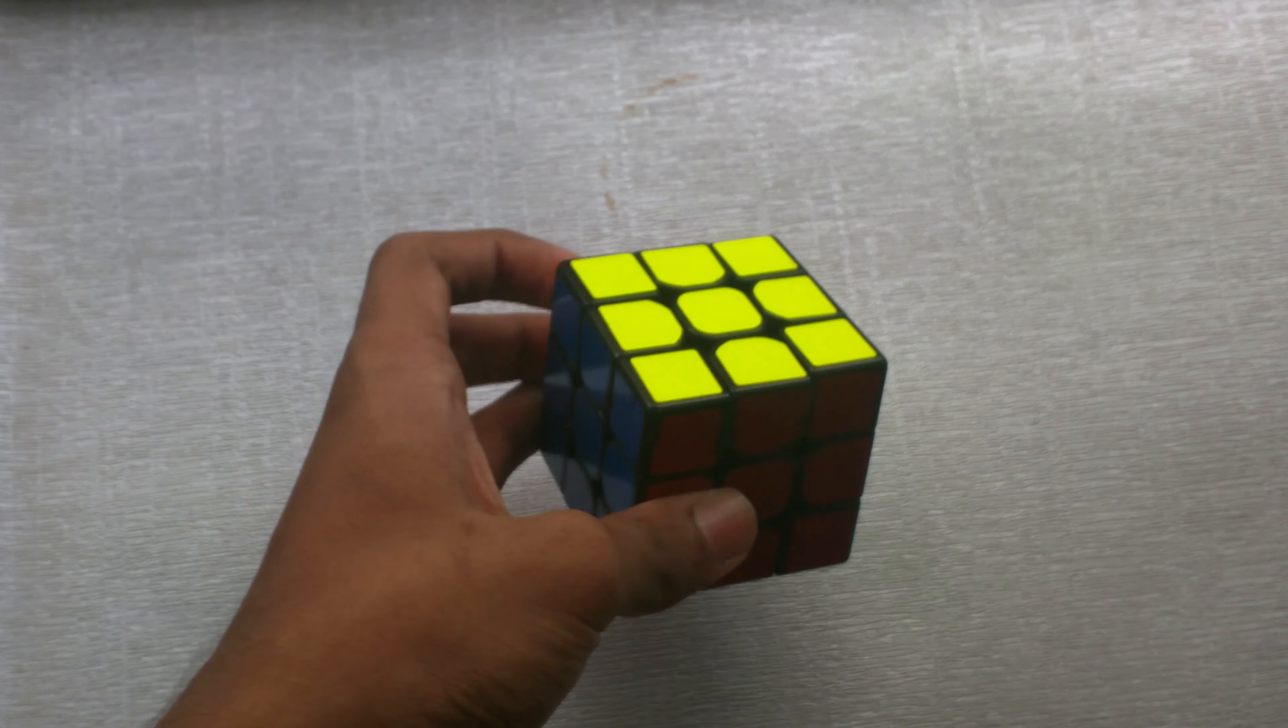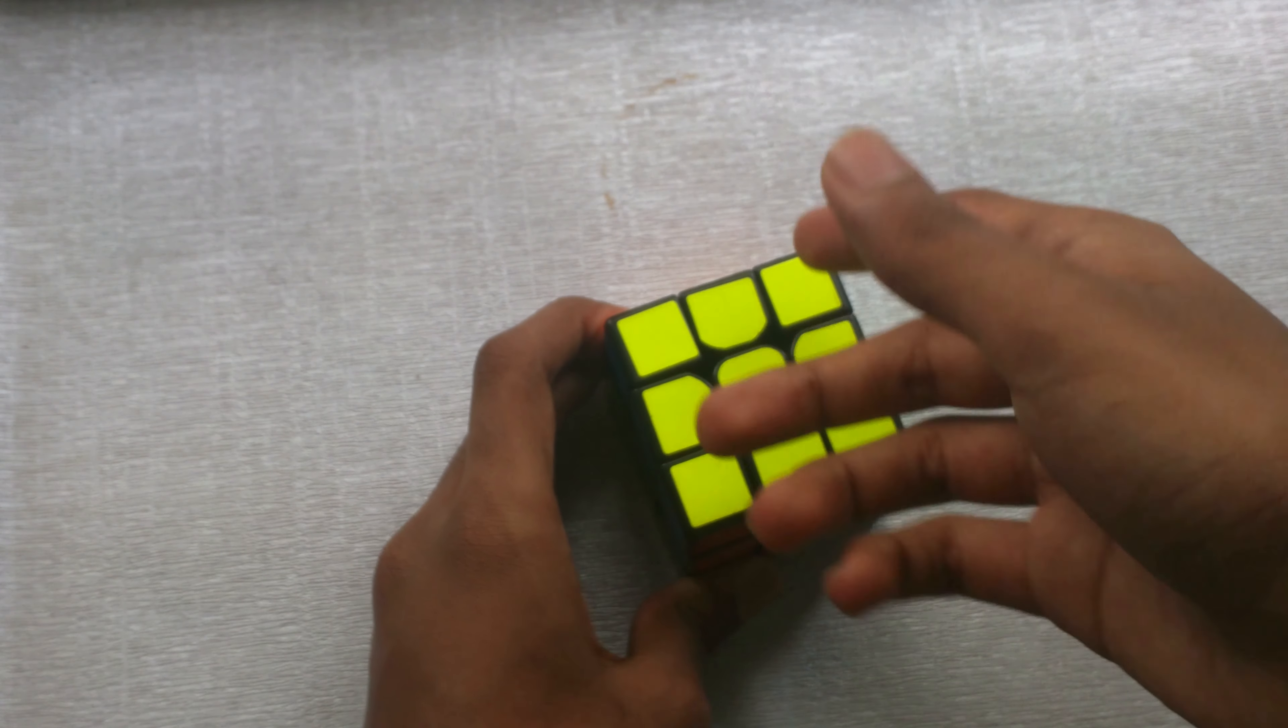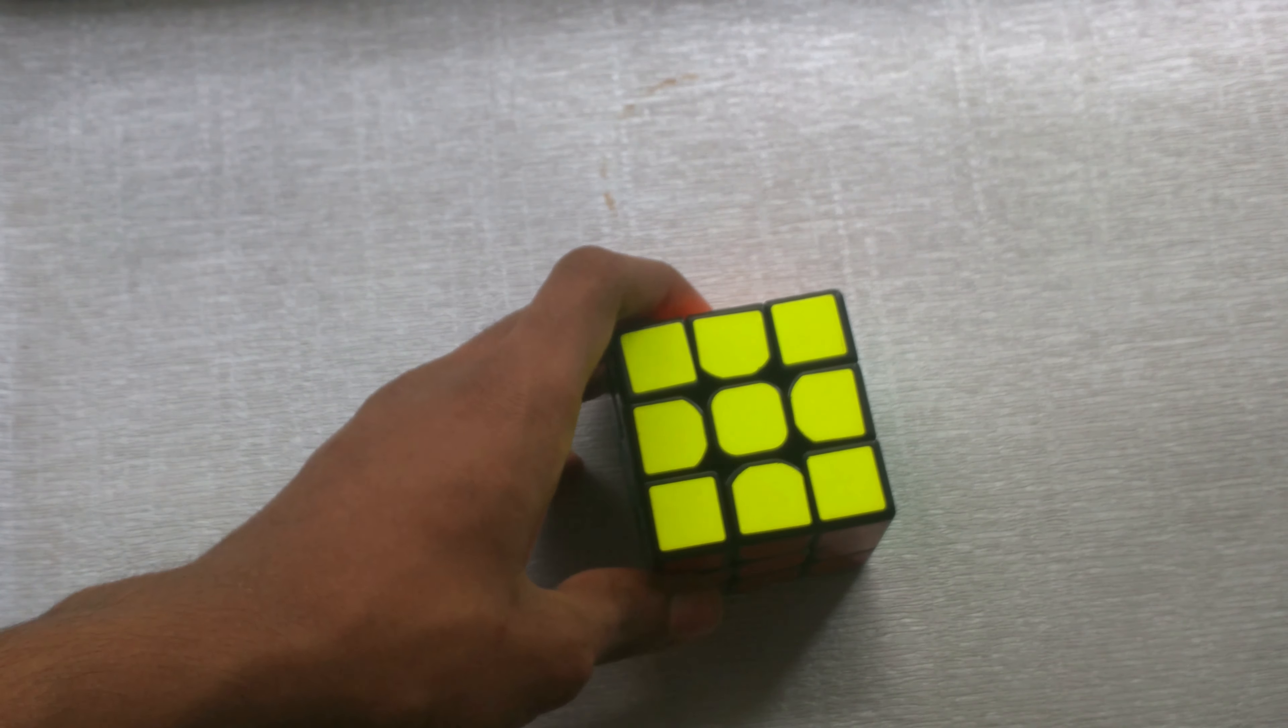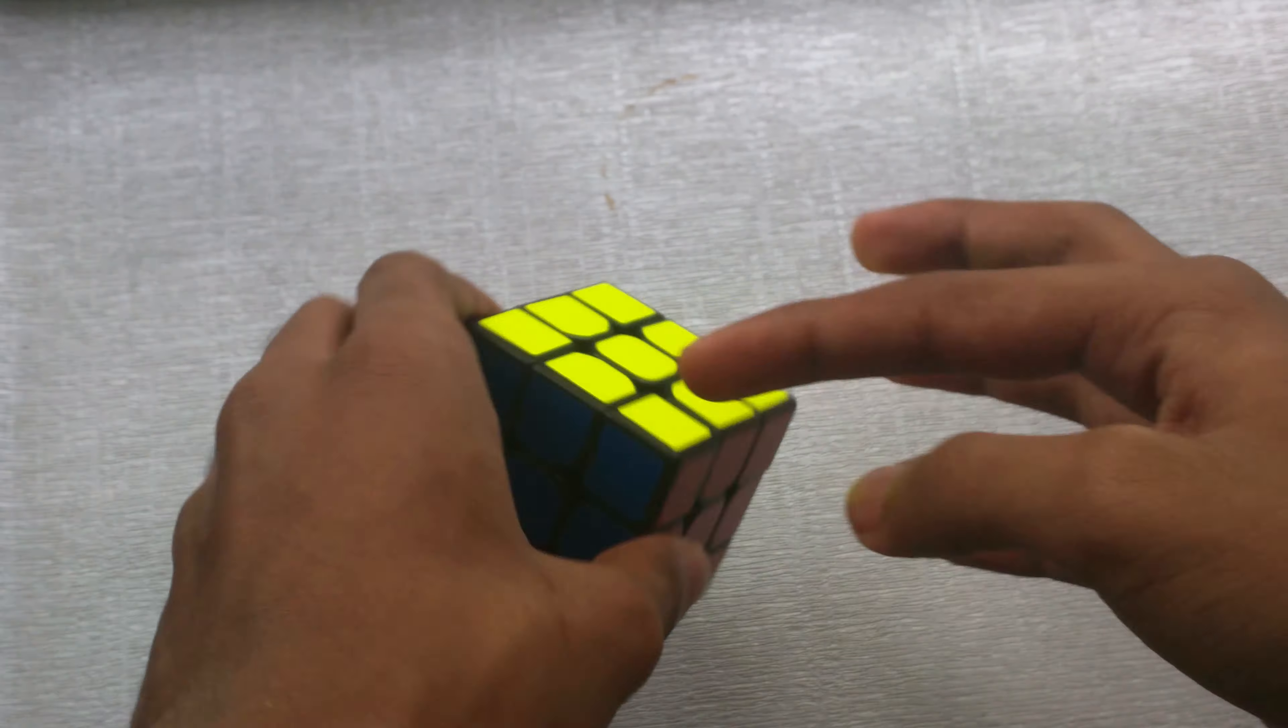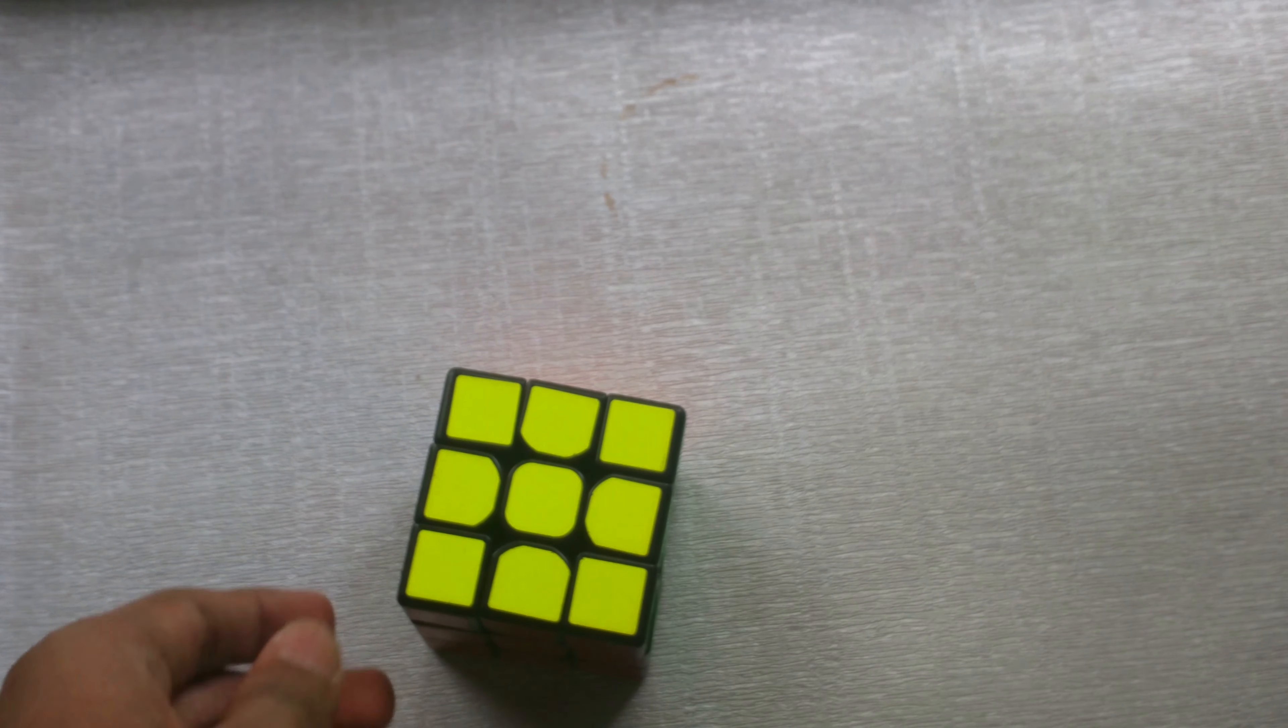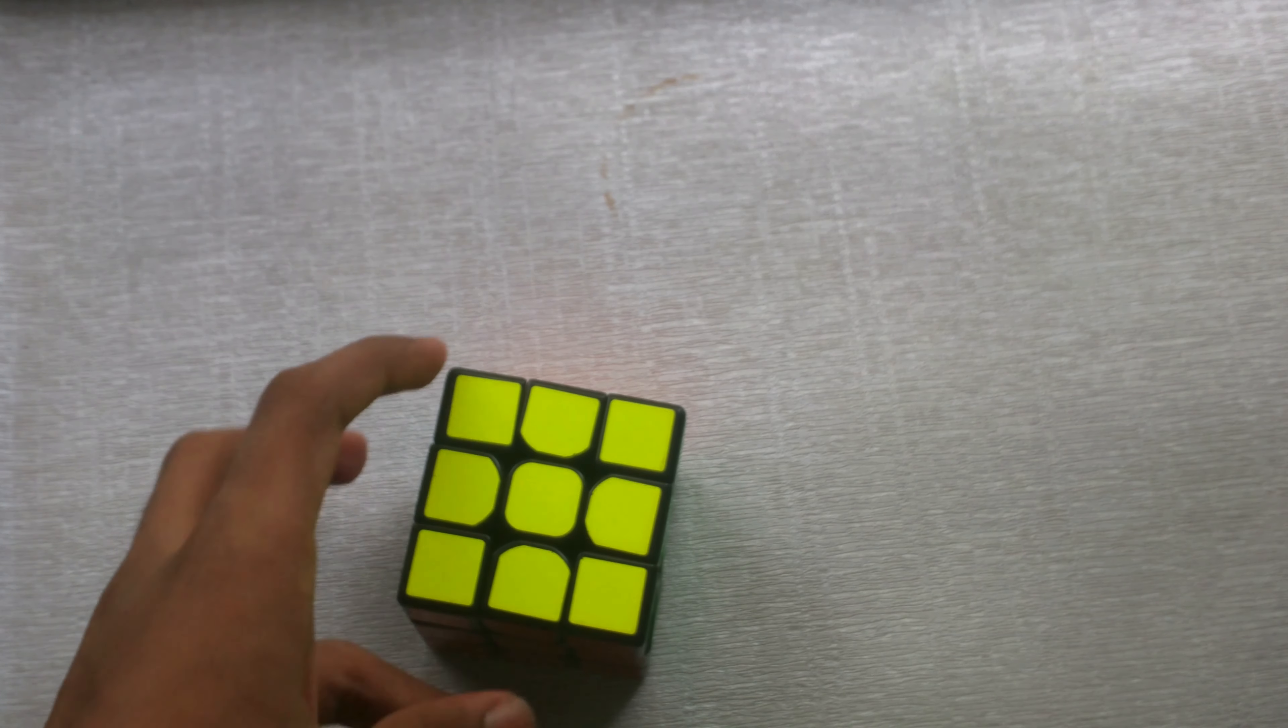Then the OLL is just solving the entire face, though you don't care about the corners or any of that stuff. And then PLL is just aligning the rest of the pieces. It's pretty basic to understand.